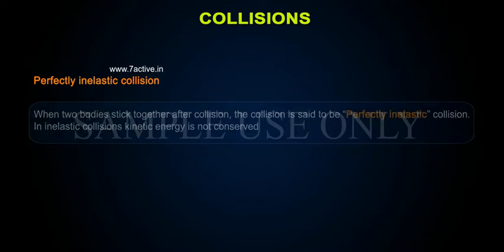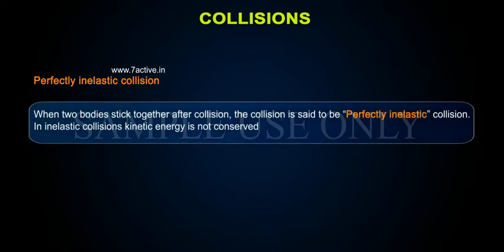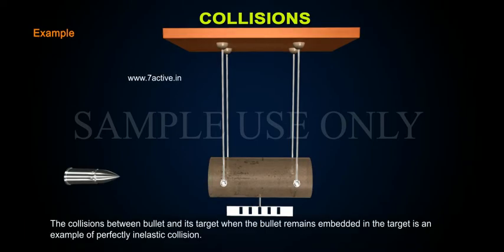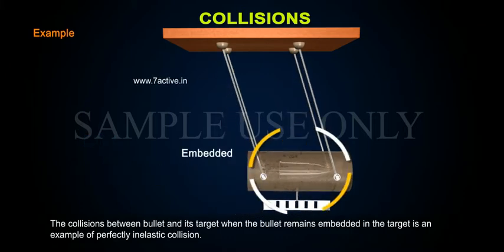Perfectly inelastic collision. When two bodies stick together after collision, the collision is said to be perfectly inelastic. In inelastic collision, kinetic energy is not conserved. Example: The collision between a bullet and its target, when the bullet remains embedded in the target, is an example of perfectly inelastic collision.